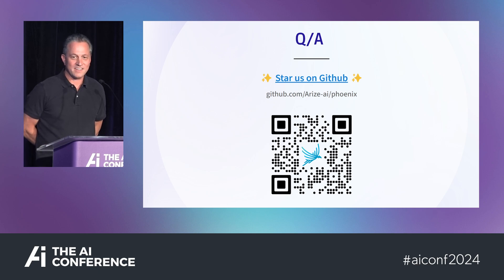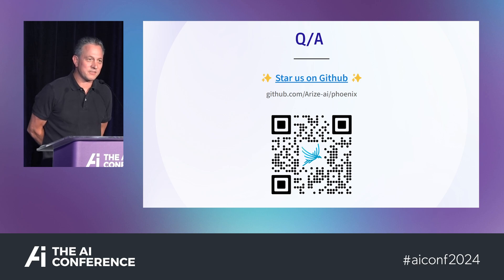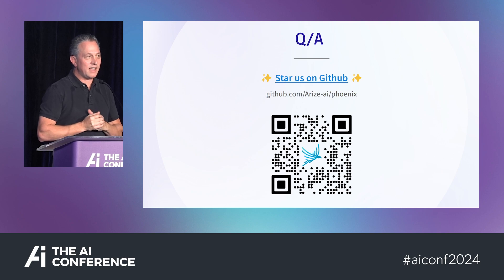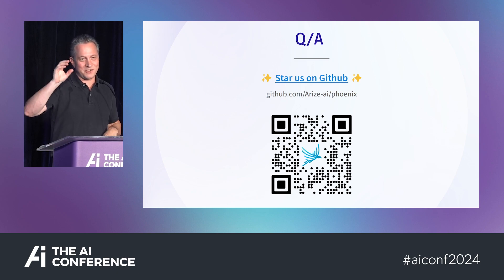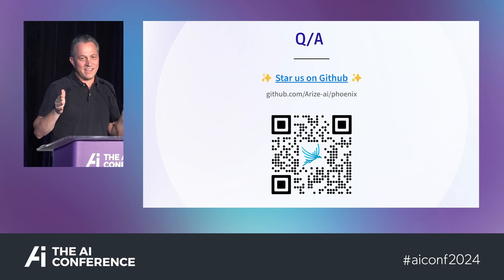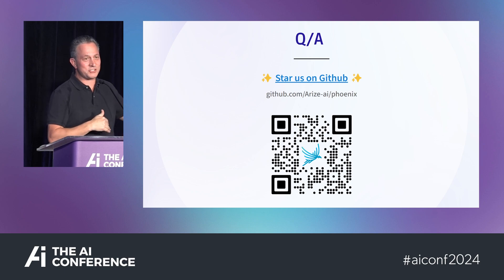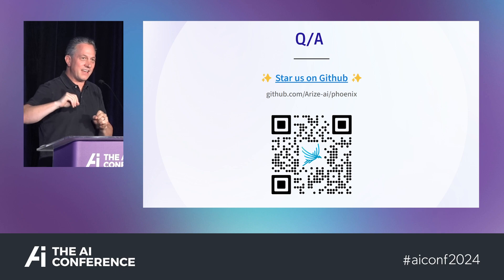Q: What do you mean by parameter extraction? In function calling — the intent routing of LLMs — there are two main things it does: it determines the function call, which is the action it thinks you should take, and it extracts parameters from the data to use in that function. You define as part of your tool-calling definition what you'll need in the next stage, and it extracts that for you.